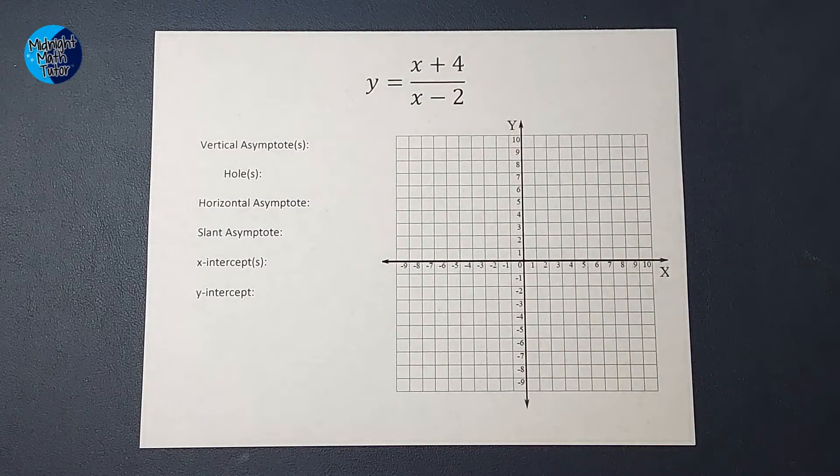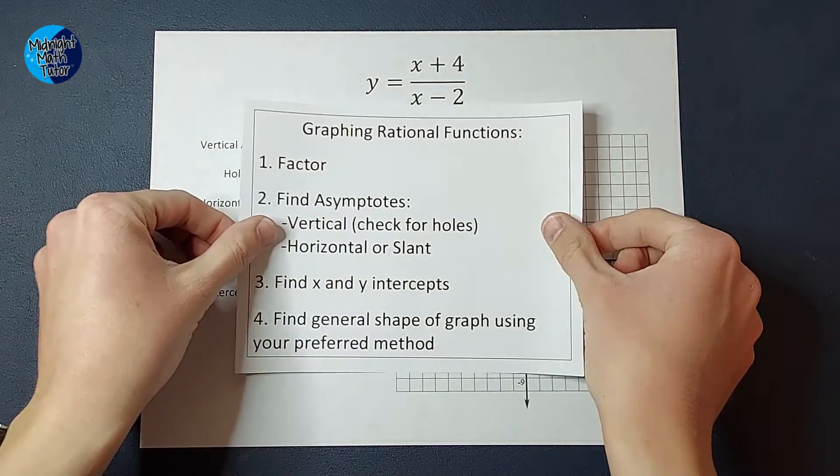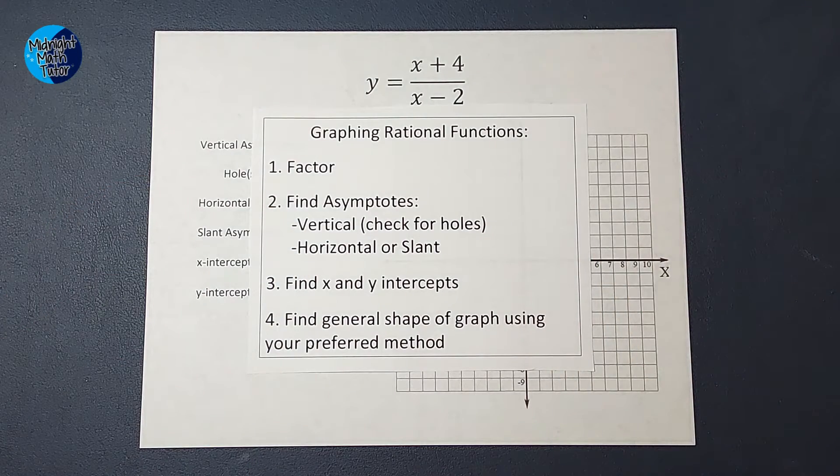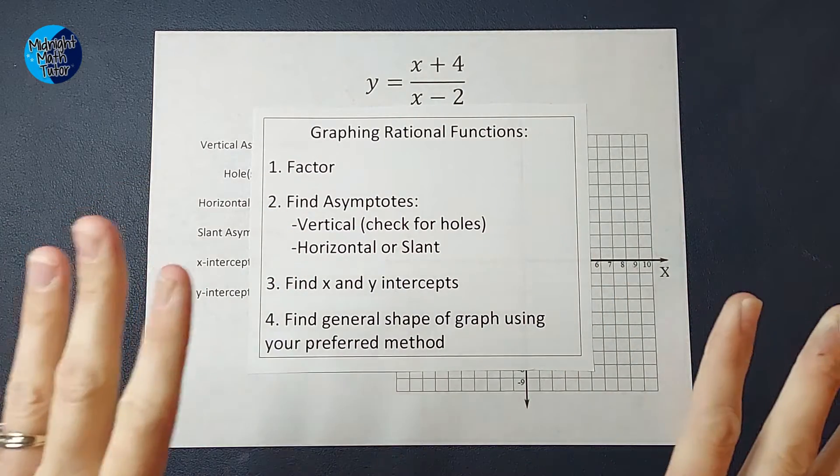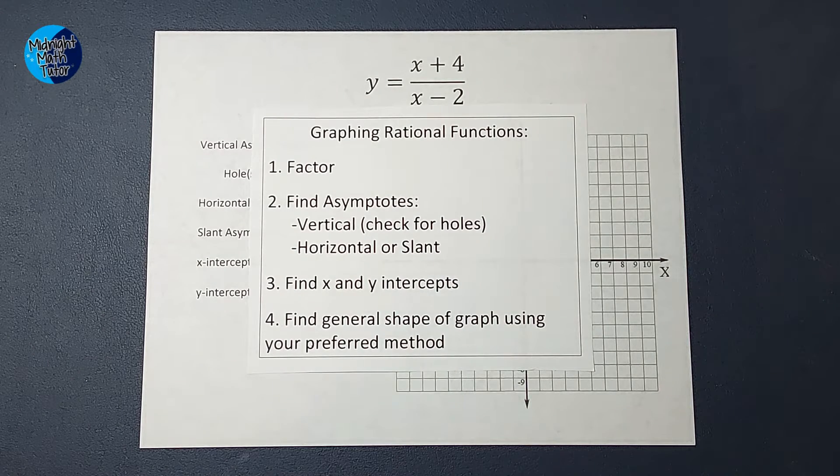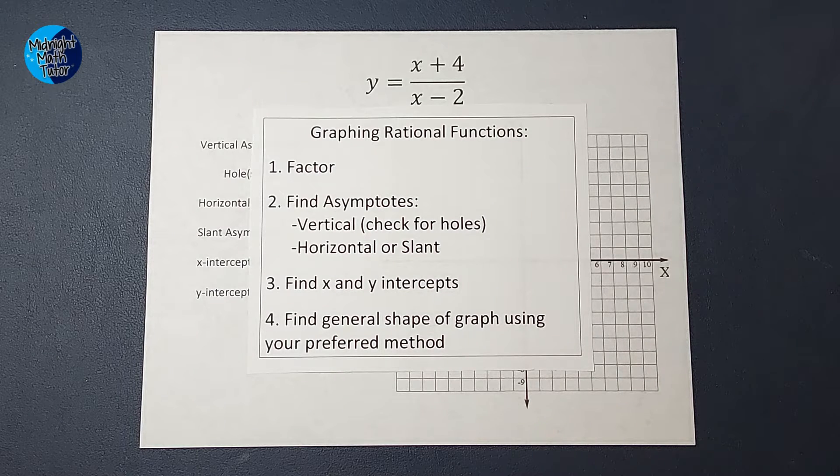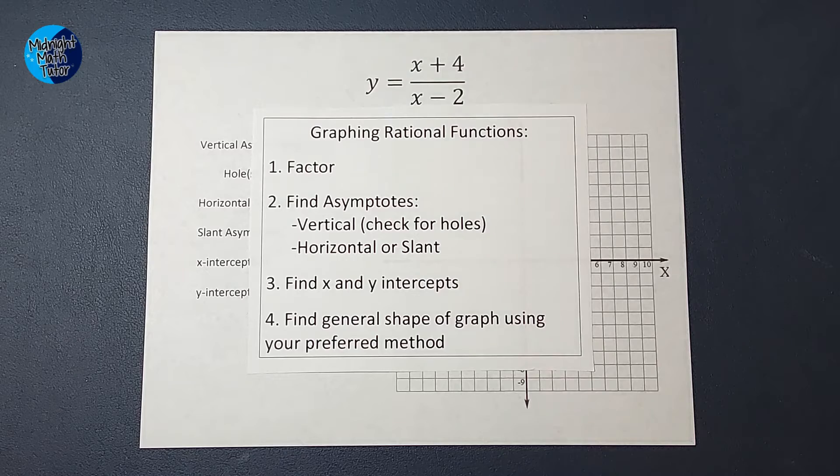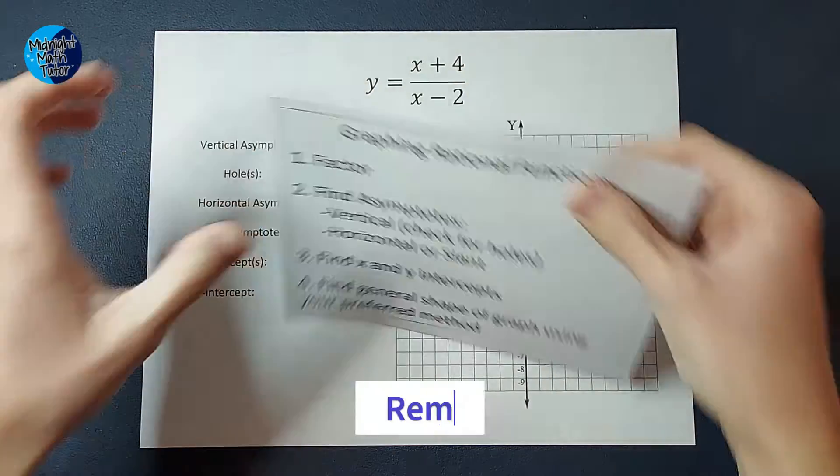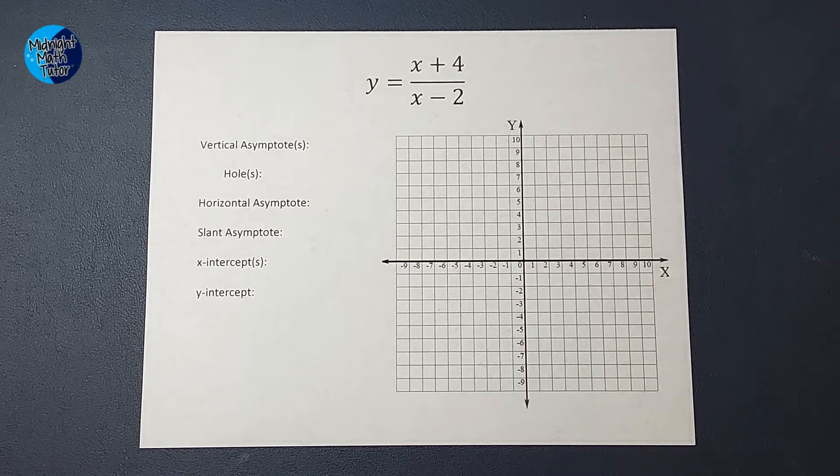When we are graphing these, we are going to follow some very solid steps. First of all, we're going to factor if we need to. Second, we're going to find asymptotes: our vertical, we're going to check for holes, and then we're going to look for a horizontal or slant. Then we're going to find our x and y intercepts, and then we're going to figure out the general shape of the graph using our preferred method. So first things first, we need to factor. Guess what? This can't factor anymore, so we're good. Step one's done.